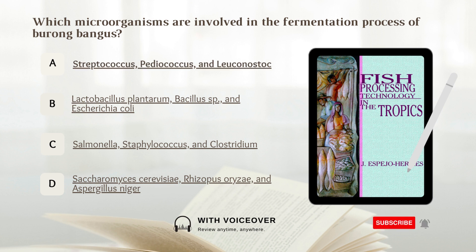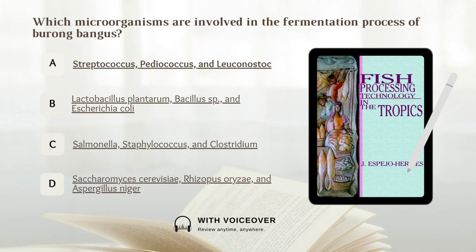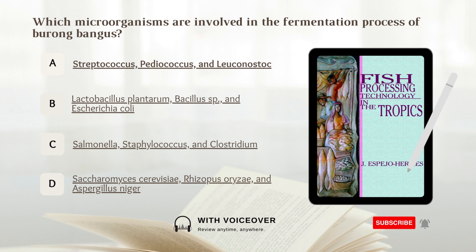A) Streptococcus, Pediococcus, and Leuconostoc. The fermentation of burong bangus is initiated by Streptococcus, which persists through the process. Pediococcus appears next but forms only a small percentage of the microflora. Both Leuconostoc and Lactobacillus emerge on the third day and are present until the end; Leuconostoc predominates in the final days. Nine strains of lactic acid bacteria — Lactobacillus plantarum — that hydrolyzed starch were isolated from burong bangus.